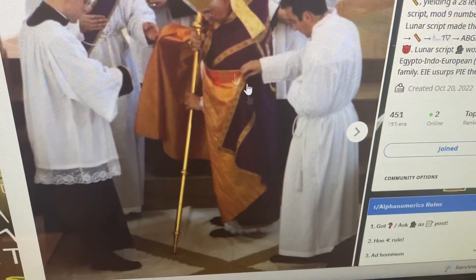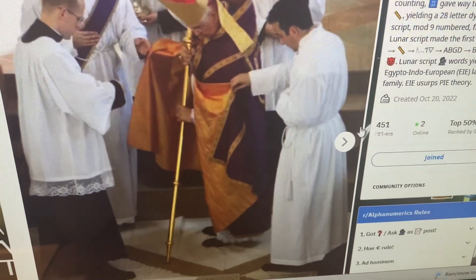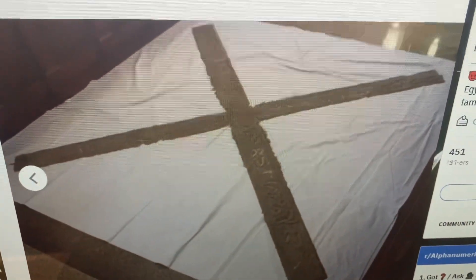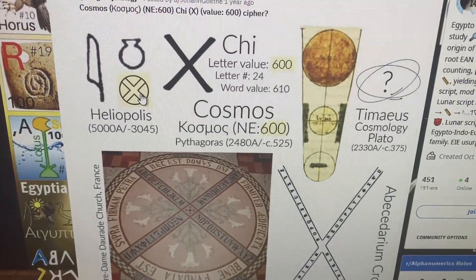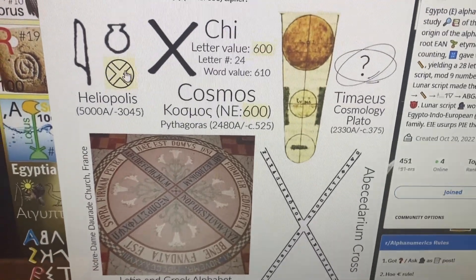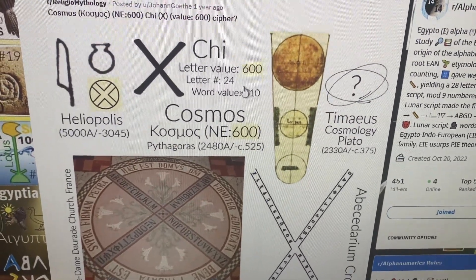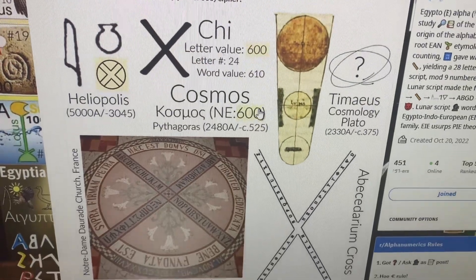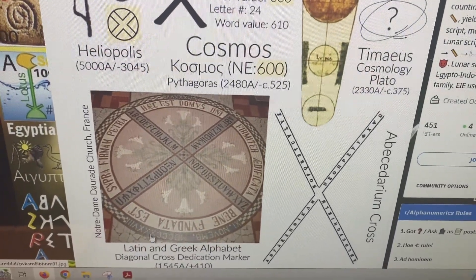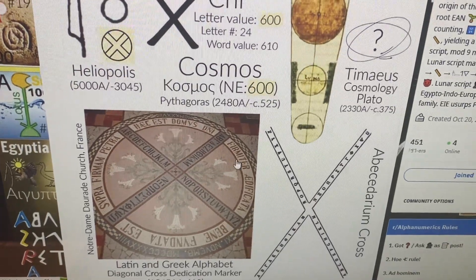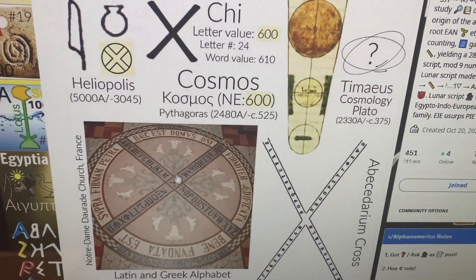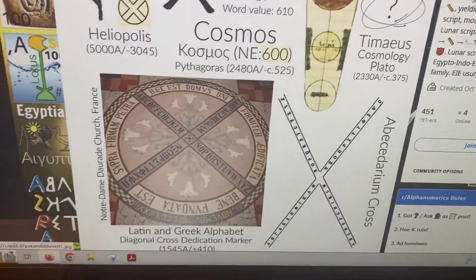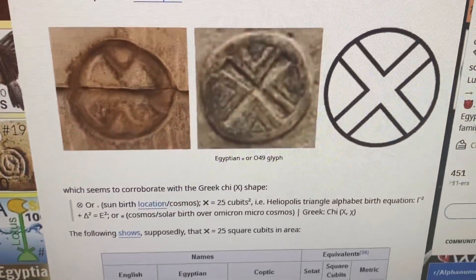We also know that the same X is found in the name of Heliopolis and Hermopolis, but it's also the letter Chi, value 624th letter. Here is another example showing Greek letters Alpha to Omega and then Latin letters A to Z, and here's what they look like in stone.